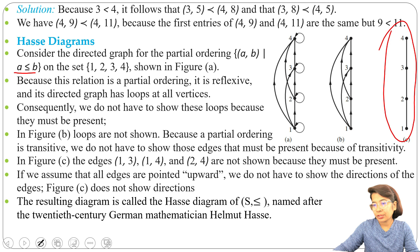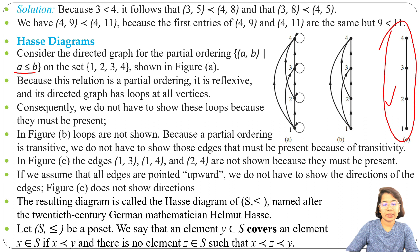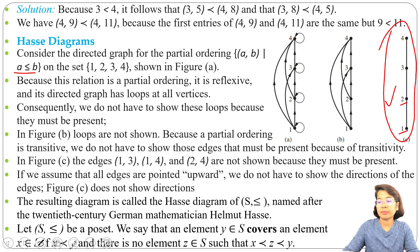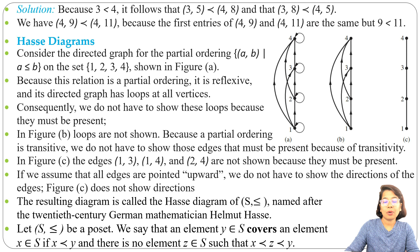Let S be a poset. We say that an element y ∈ S covers an element x ∈ S if x < y and there is no element z such that z comes between x and y. For example, 2 covers 1 — there is no element between 2 and 1. 3 covers 2, so the pair (2, 3) belongs to the covering relation. We can create the Hasse diagram directly by marking the covering relation.